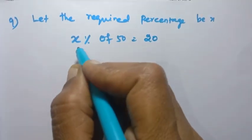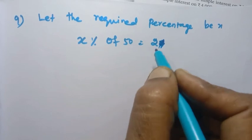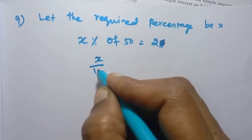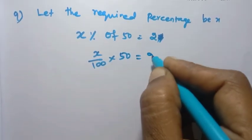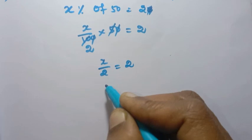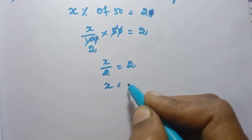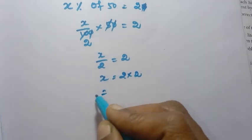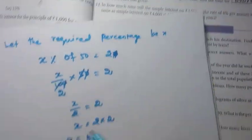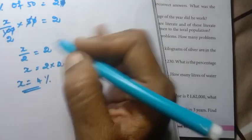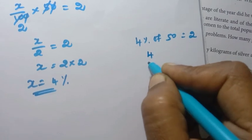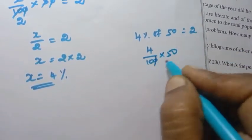We know x/100 × 50 = 2. The zeros cancel, giving x/2 = 2, so x = 4. Therefore 2 is 4% of 50.